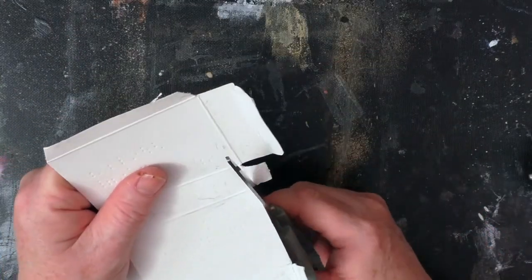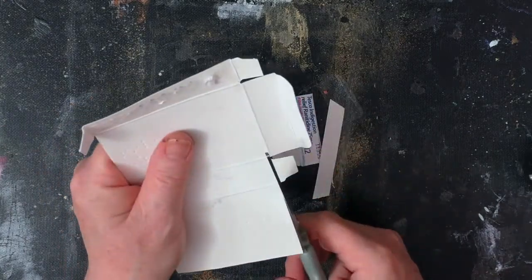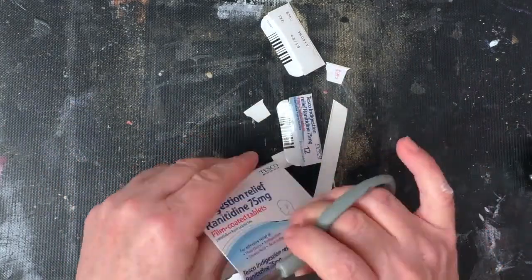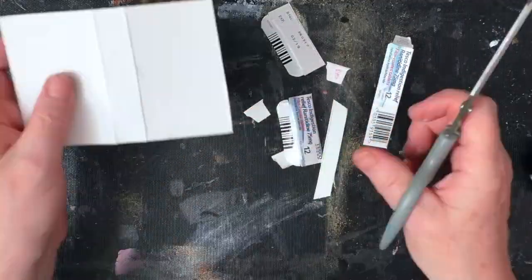I've taken this little box that I think had some indigestion relief tablets in it, and I'm cutting the rough edges around the side. Now I have the basic journal shape.